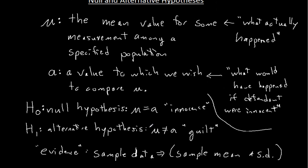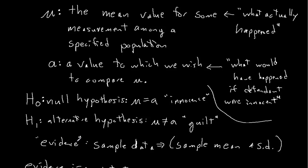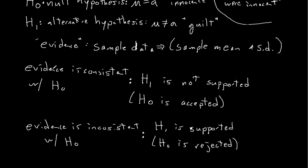When we're doing a trial, we gather our evidence; when we're doing a statistical test, we gather our sample data. Then we examine that evidence in a trial and determine whether or not it's consistent with what would have happened if the defendant were innocent — whether it looks reasonable that the defendant is innocent — and then we make our verdict based on that. If the evidence is consistent with innocence, then we're not going to support a verdict of guilty. Notice that's how it's phrased: 'not guilty' — they don't say 'innocent' at the end of a trial. If the evidence is inconsistent with innocence and what we see just doesn't line up with the idea that you didn't do this crime, then the only reasonable conclusion is that the crime was done by the defendant. In other words, innocence is rejected.